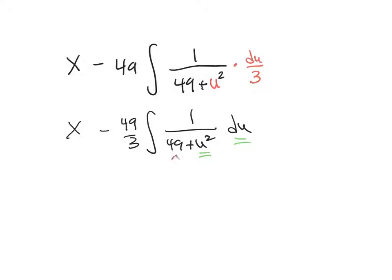In this case, I'm going to make 49 be a squared, and so that means that a equals 7. And now when I write out my final answer, I'll have the x minus. I have 49 over 3 as my constant multiple, and then I'm going to have 1 over 7, because that's 1 over a, inverse tangent of u over a, and we know u is 3x, and a is 7, plus c.